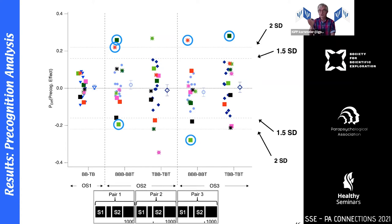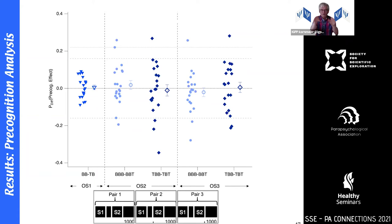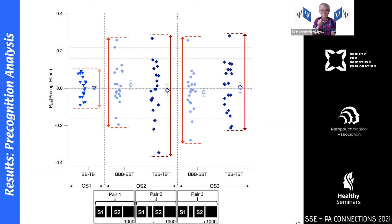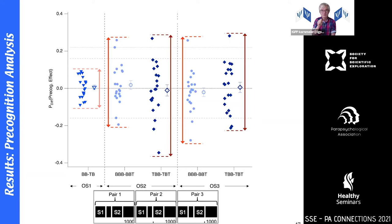We have three participants who consistently show data beyond our threshold. Ignoring the focus on individual participants and looking at the global pattern, we can observe another interesting thing: the variability between participants in observation sequence one is much smaller than in observation sequences two and three, which is significant.